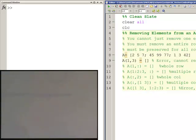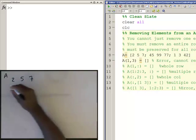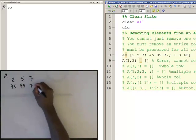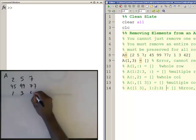This video is going to cover removing elements from an array. It's going to use a lot of the same things we used in accessing and assigning elements to an array. So we're going to start off with array A, which is going to be the same one we had before: 2 5 7; 45 99 77; 1 3 and 42.